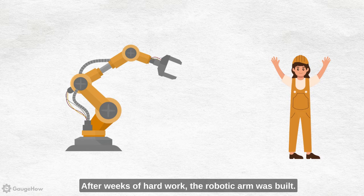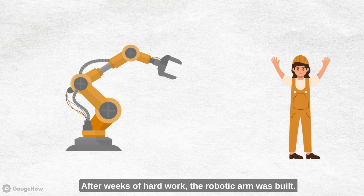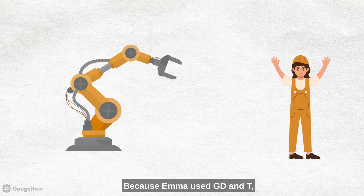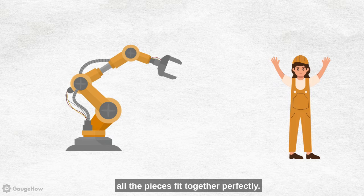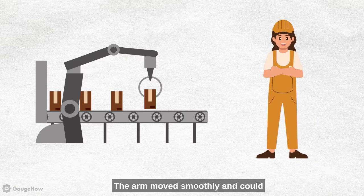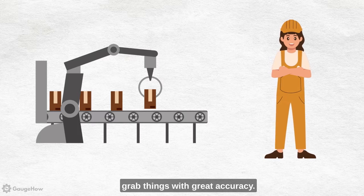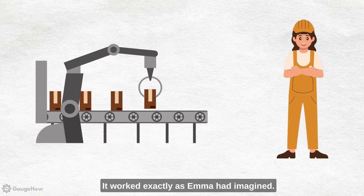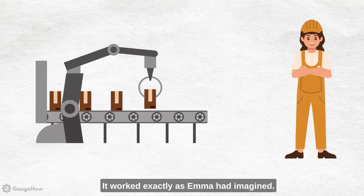After weeks of hard work, the robotic arm was built. Because Emma used GD and T, all the pieces fit together perfectly. The arm moved smoothly and could grab things with great accuracy. It worked exactly as Emma had imagined.